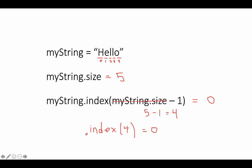But you're probably asking why don't we just write this then? Why do we have to write myString.size minus 1? Why can't we just say myString.index and then just write 4? Because we know that the size is 5, we know that 5 minus 1 is 4, we went to first grade, right?